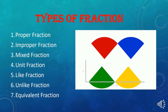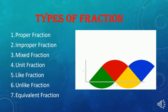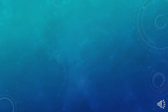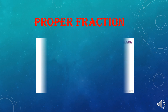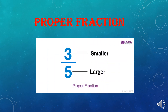Now let's talk about these types of fractions one by one. A Proper Fraction is a fraction, as shown in the video, where the numerator is smaller and the denominator is larger. So for a proper fraction, the numerator should be smaller and the denominator should be larger.